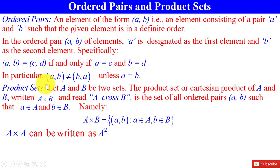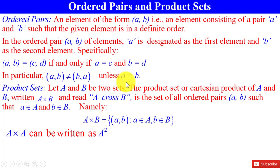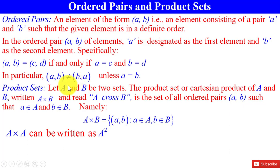In particular, ordered pair (A, B) is not equal to (B, A) unless A is equal to B. That is, only if A and B are equal will the two ordered pairs be equal; otherwise they will not be equal.